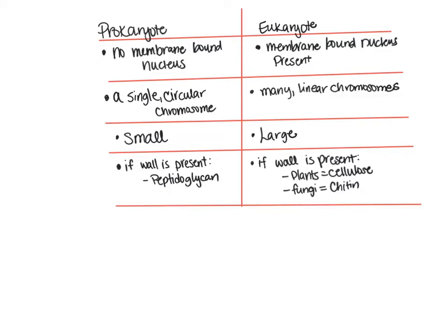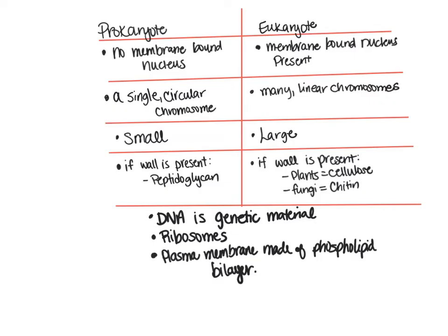Now let's talk about what these two types of cells have in common. First is their genetic material — both cells contain DNA as the genetic material. Second, they are both going to have organelles called ribosomes. Now these are not membrane-bound organelles; instead, ribosomes are made of rRNA and proteins. Next, prokaryotes and eukaryotes are both surrounded by a plasma membrane made of a phospholipid bilayer. Last, let's talk about the different types of organisms representative of these two types of cells: prokaryotes are going to be exclusively bacteria, whereas eukaryotic cells will include plants, animals, fungi, and protista.